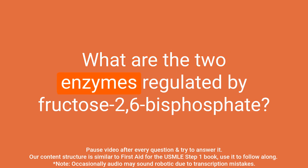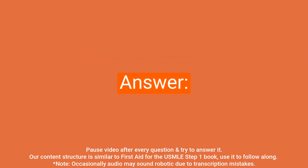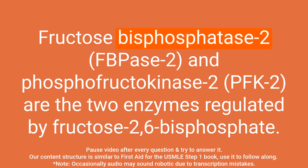Question: What are the two enzymes regulated by fructose 2,6-bisphosphate? Answer: Fructose bisphosphatase-2 (FB-PACE-2) and phosphofructokinase-2 (PFK-2) are the two enzymes regulated by fructose 2,6-bisphosphate.